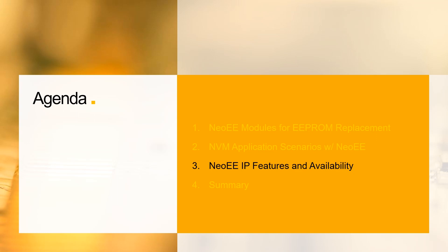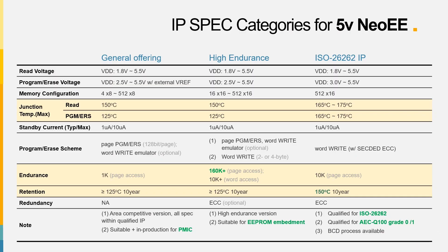As more and more applications request MTP and EEPROM solutions, NeoEe has already offered a wide selection of features and platform choices. So let's move on to the third part: NeoEe IP features and availability. Talking about the EEPROM solutions based on NeoEe technology, let's take five categories as examples. NeoEe offers functions under wide VDD range, low standby current, a high operating temperature of more than 125°C, high-quality data retention specs for fresh or cycled states, and various functions for the three categories.